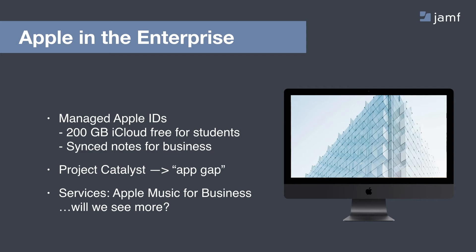Project Catalyst, unveiled at WWDC, is an internal technical improvement that makes it much easier for application vendors to build apps for both iOS and macOS. Rather than two separate distinct builds, Project Catalyst helps you build once and deploy to both ecosystems. That's a big deal because you may have an application available on Mac but not on iPadOS yet. Project Catalyst makes this easier for the vendors you rely on, getting you closer to full application support when users want to switch to Apple.